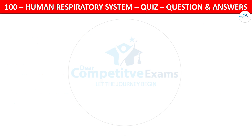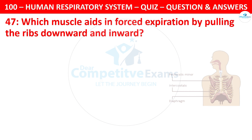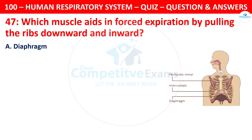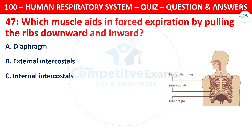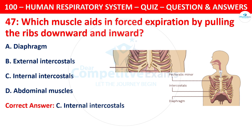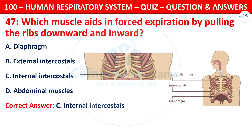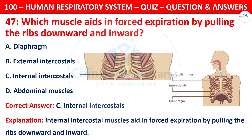Question 47: Which muscle aids in forced expiration by pulling the ribs downward and inward? The options are: diaphragm, external intercostals, internal intercostals, or abdominal muscles. The correct answer is C — internal intercostals. Internal intercostal muscles aid in forced expiration by pulling the ribs downward and inward.